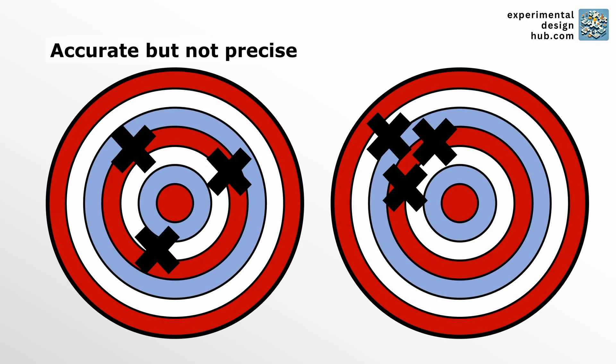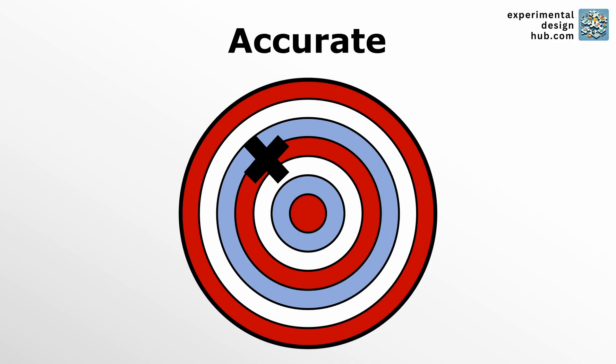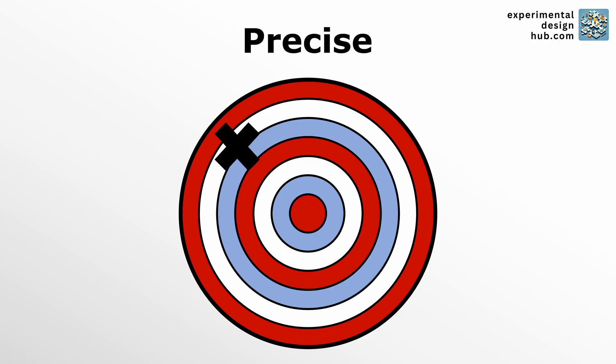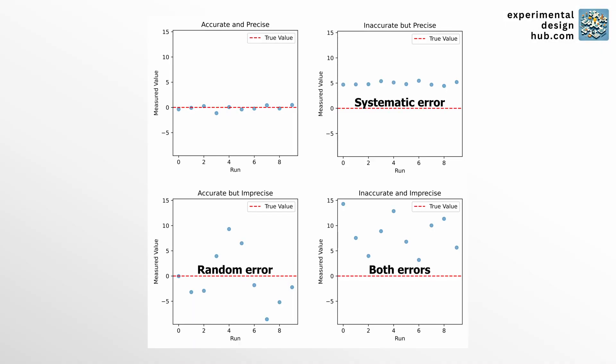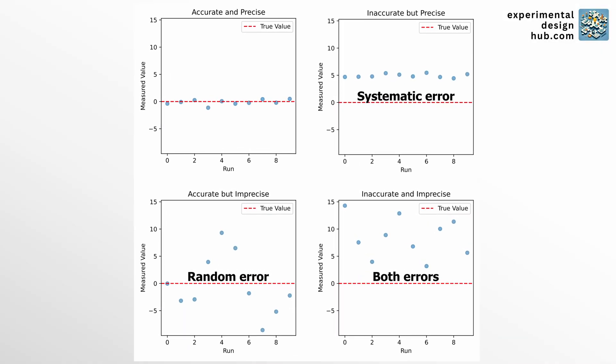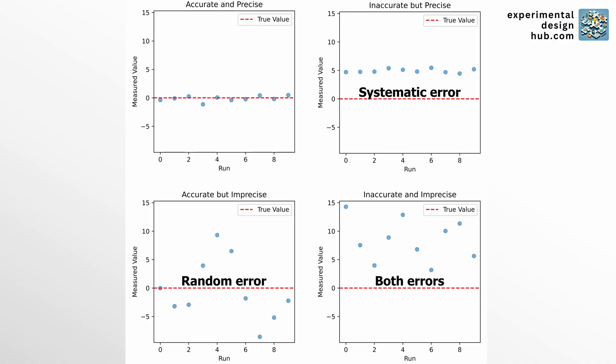But how do random errors and systematic errors affect your results and your measurements? First of all, we need to distinguish between accuracy and precision. Accuracy refers to how close the experimental results are to the true value, and precision denotes how reproducible your results are. Typically, random errors affect the precision of your experiment, and systematic errors affect the accuracy.